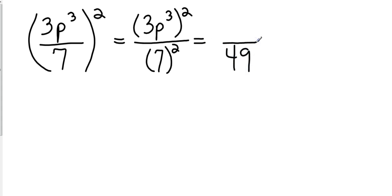Now I look up to the top, and this is power to a power. So I'm going to take 3 to the 2nd power, which is going to give me 9. And now p to the 3rd power raised to the 2nd power, because there is not a variable here, I'm going to multiply those. So that's going to be 9p to the 6th. So I have 9p to the 6th over 49.